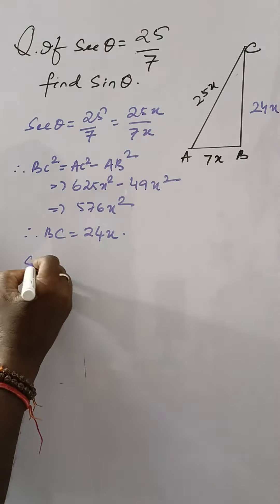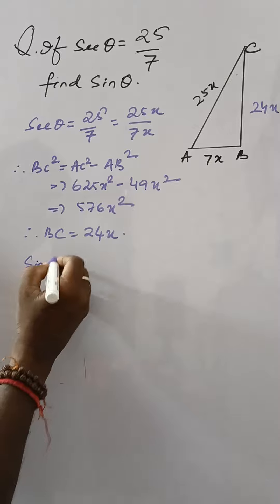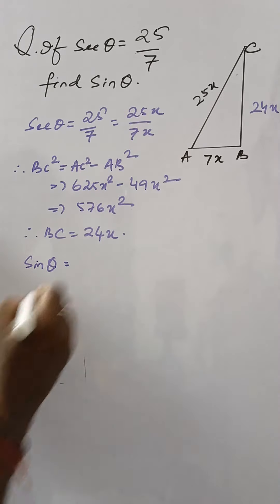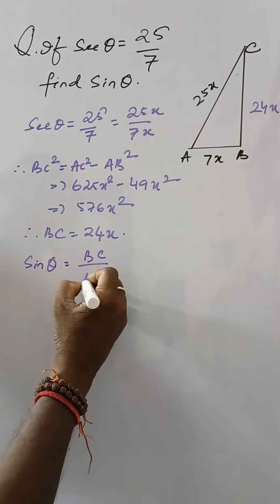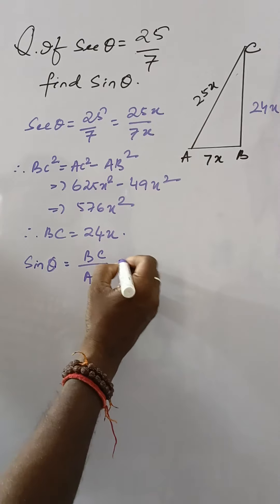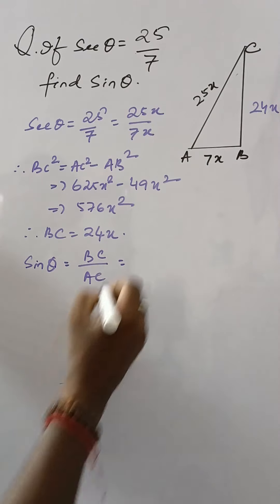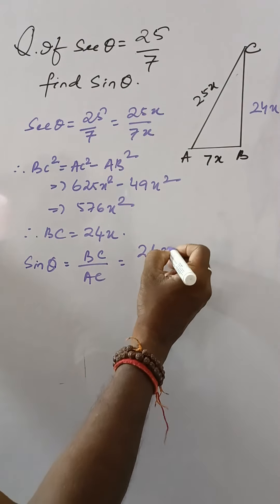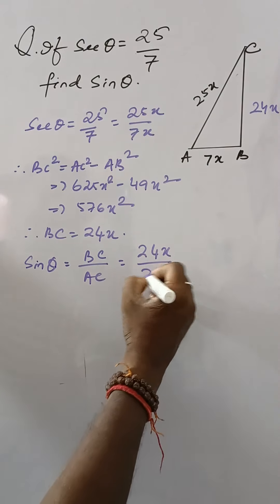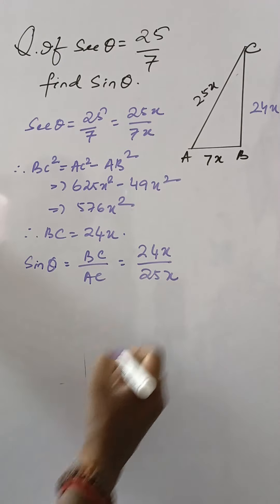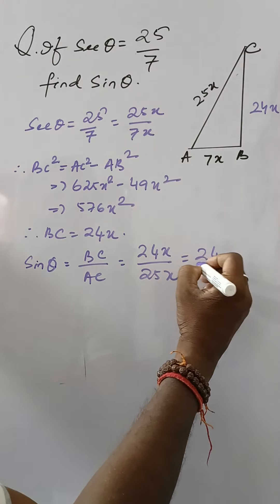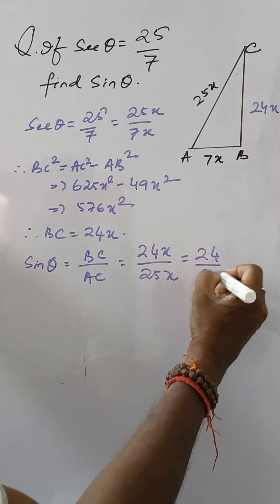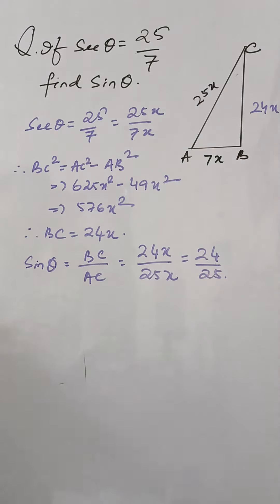Now we need sine theta. Sine theta is equal to BC by AC, so that is 24x by 25x, which equals 24 by 25 in trigonometrical ratios.